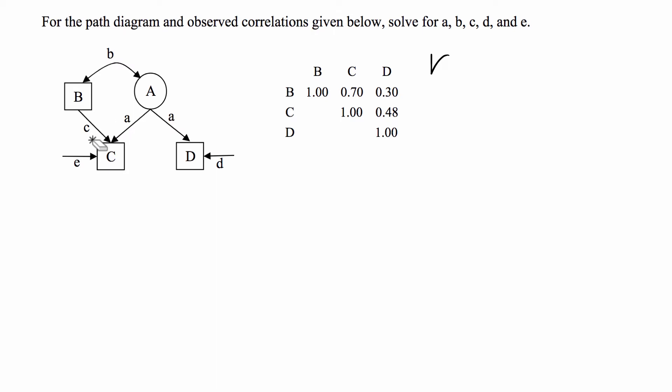We're going to use Wright's path analysis rules to find the correlation B,C, B,D, and C,D. The correlations between B and C, there's C which is the direct correlation, and then we can also do B,A, and that's it for the correlation between B and C.